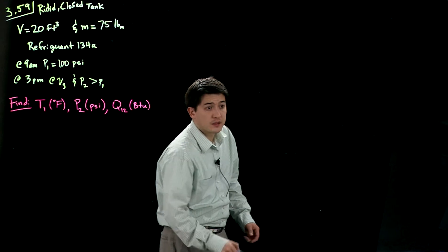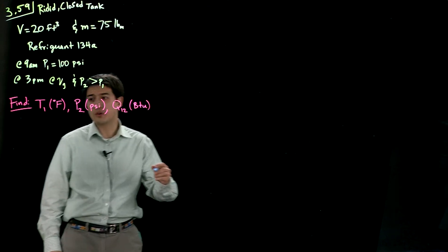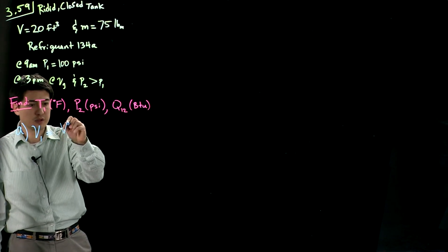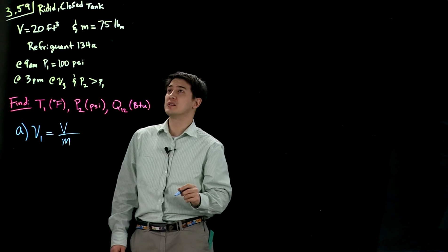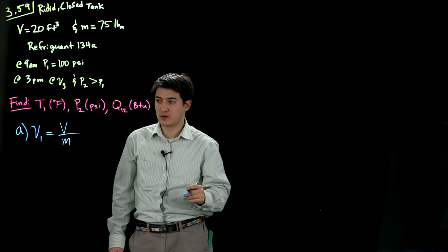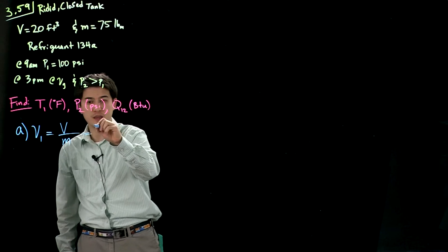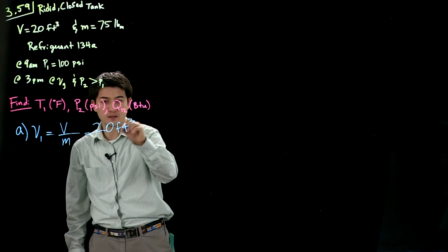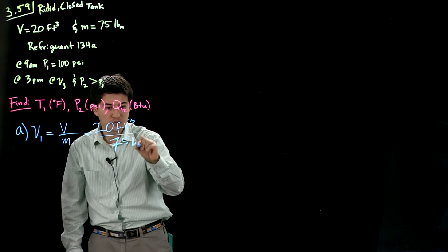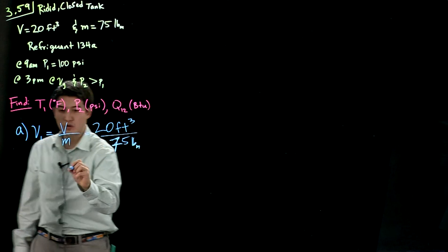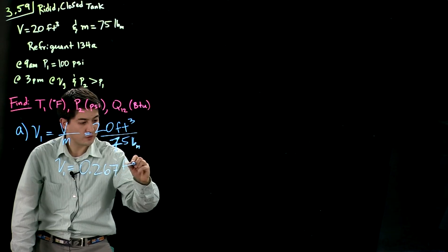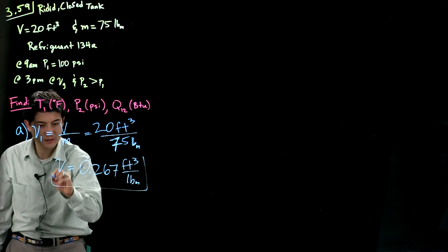So let's start with finding the specific volume here. This is for part A. We need the specific volume. Here is going to be the initial volume that we have over the mass. I forgot to mention that we have 75 pounds of this refrigerant inside this closed box. So we have our volume here. We're assuming we're filling the entire thing. This is 20 cubic feet, and we have 75 pounds of this refrigerant.